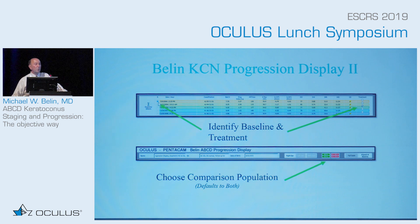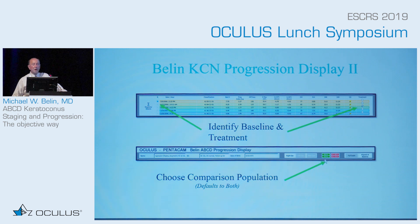We allow you to designate what your baseline exam is, and you can also designate when you've done treatment — in this case, really meaning cross-linking. You can choose whether you want to compare those values against a normal population or a keratoconic population; it will default to showing both.